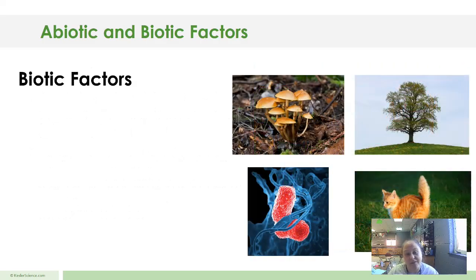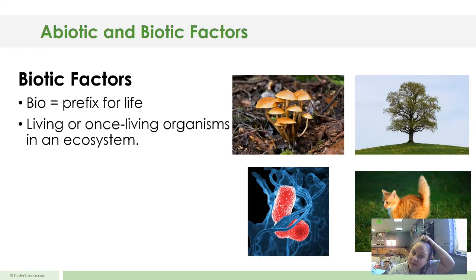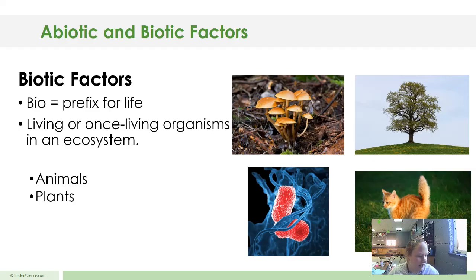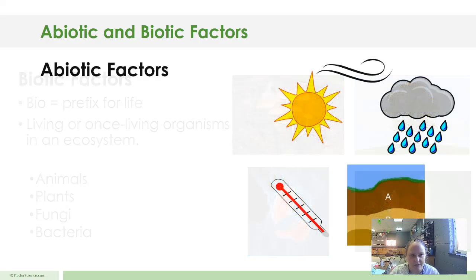Biotic factors — bio meaning life — are living or once-living organisms in an ecosystem. So animals, plants, fungi, bacteria — all those are living factors in an ecosystem.